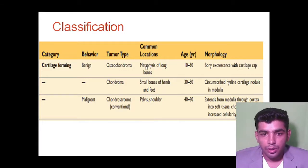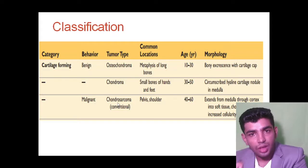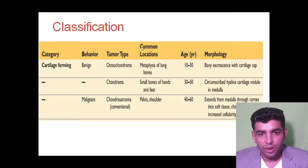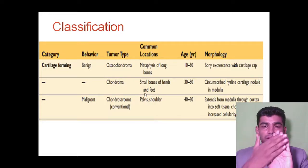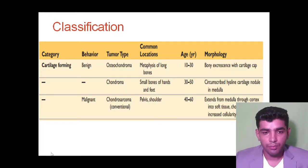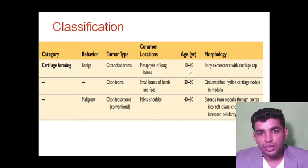The malignant type is chondrosarcoma. Common location of osteochondroma is the metaphysis of the long bone. For chondroma, it is the small bones of the hands and feet. For chondrosarcoma, it may be the pelvis or shoulder. Age ranges: osteochondroma is 10–30 years, chondroma is 30–50 years, and chondrosarcoma is 40–60 years.